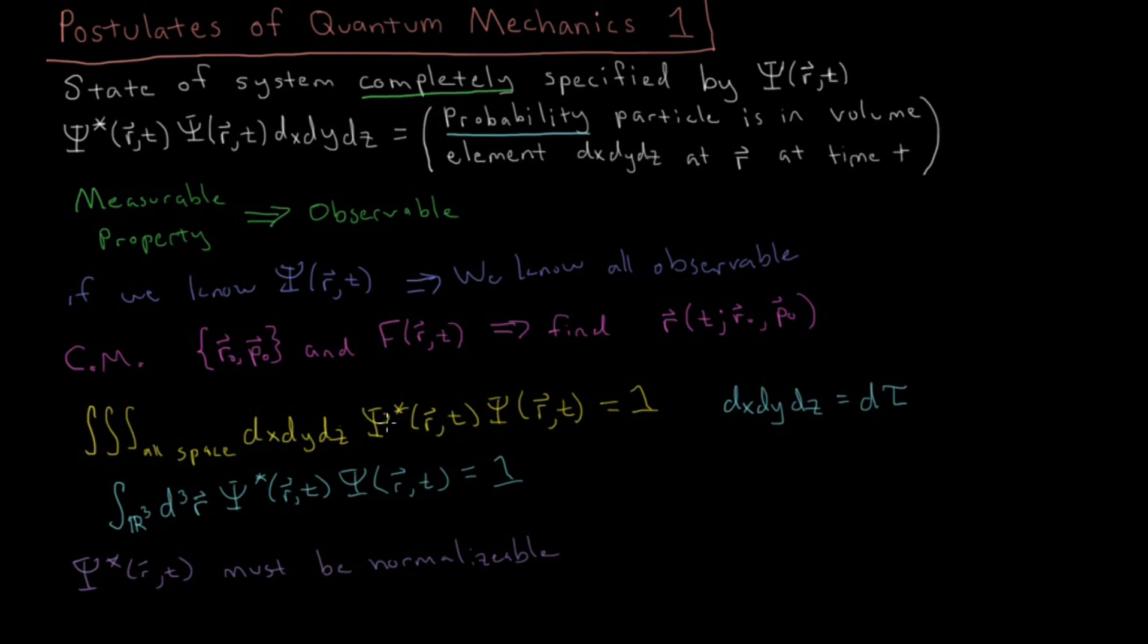So this means that if you don't have your normalization constant yet for a given Ψ, that this integral has to equal some finite value, that it can't equal infinity. Because if this integral equaled infinity, then we wouldn't be able to pick a constant which would normalize it and be able to set it equal to one.